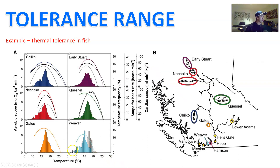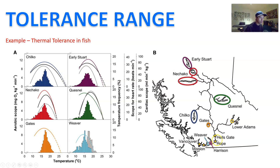Another example: thermal tolerance in fish. Here is a particular waterway in Vancouver, and you can see there are populations of types of fish living in each of these particular places. The temperature tolerance range for these species ranges depending on where they live.